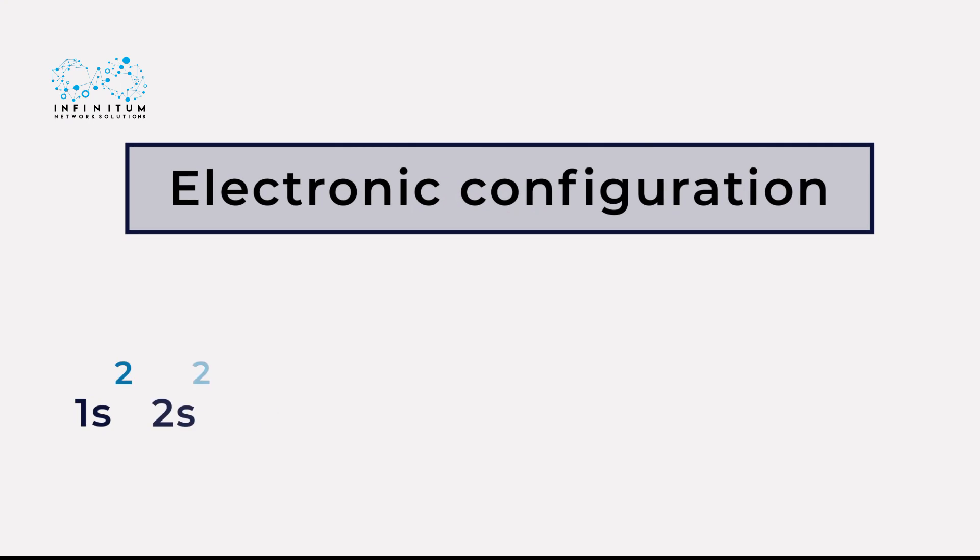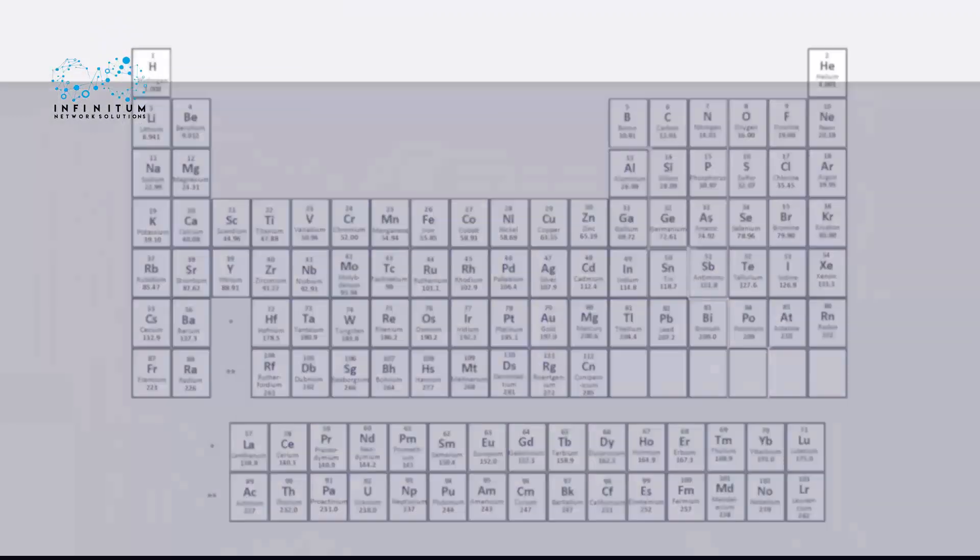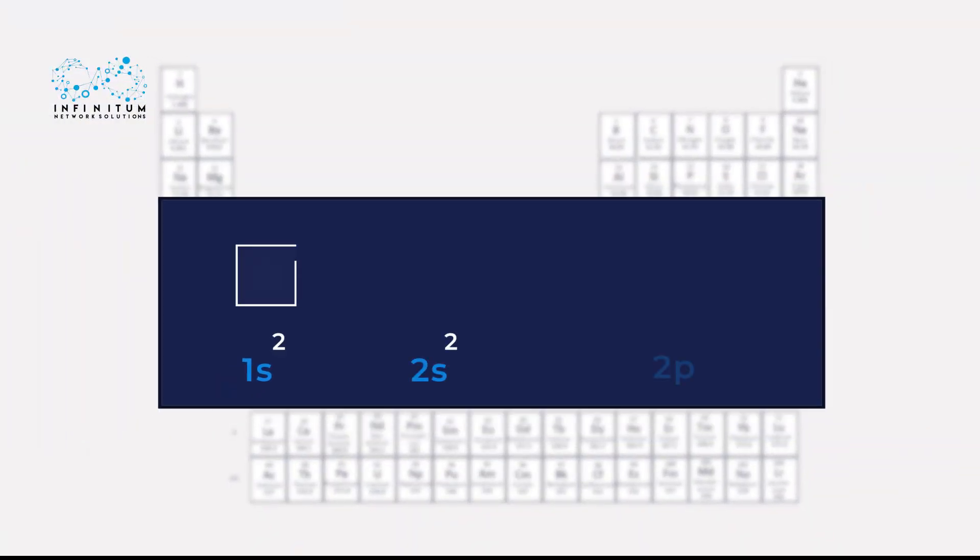The electronic configuration of atoms is a representation of the occupation of electrons in the orbitals. In other words, the electronic configuration of an atom specifies the order in which electrons fill up the orbitals in the periodic table.